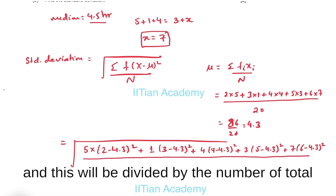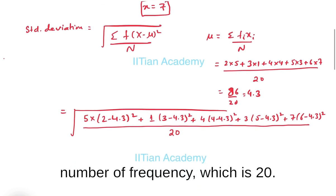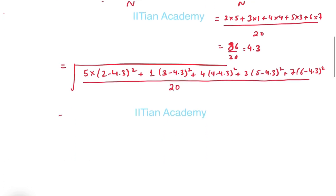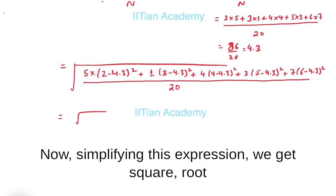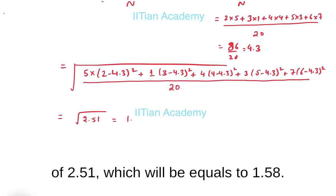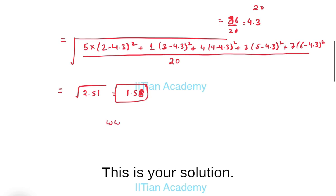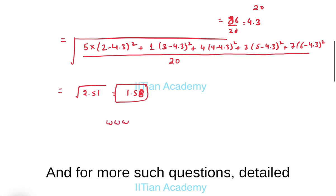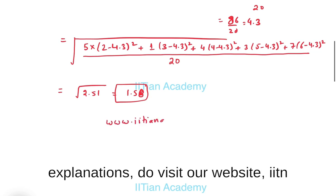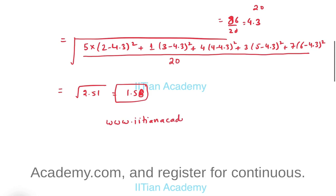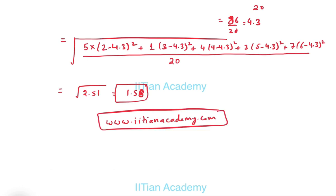Now simplifying this expression we get square root of 2.5 which will be equal to 1.58. So this is your solution. For more such questions and detailed explanations, do visit our website iitanacademy.com and register for continuous application.